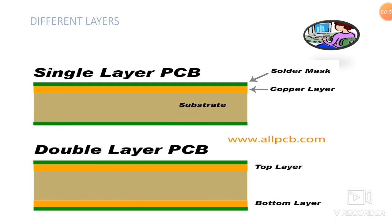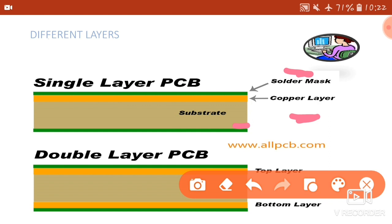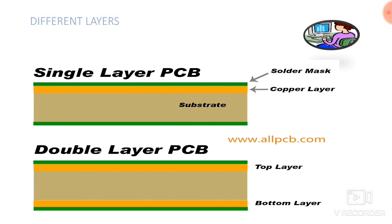Here we have single layer PCB and double layer PCB. In single layer PCB, as mentioned, we have a solder mask and copper layer along with the substrate. We have a clear solder mask and copper layer on the substrate. In double layer also we have solder mask on the copper layer, and on both sides we have two conductive layers. In the top layer we have solder mask on copper layer, and in the bottom layer also we have solder mask on the copper layer.